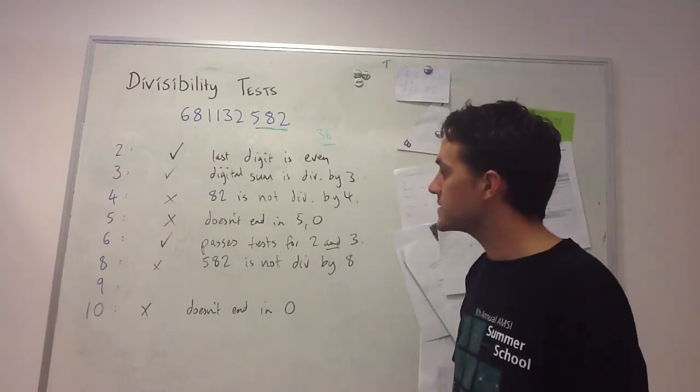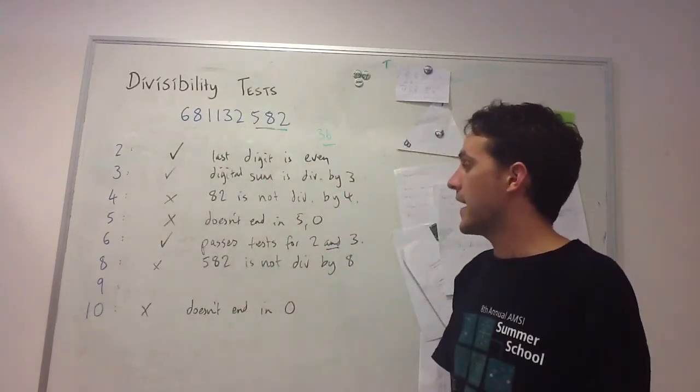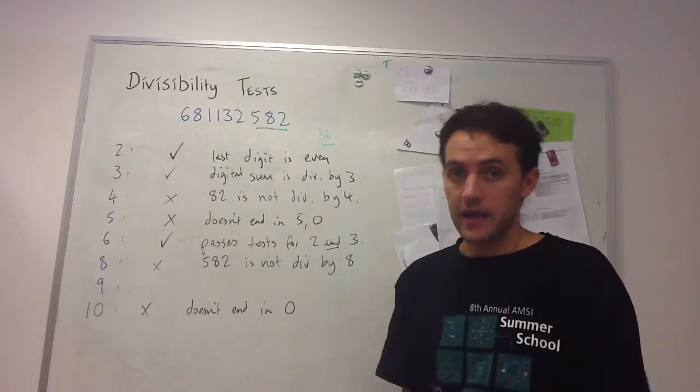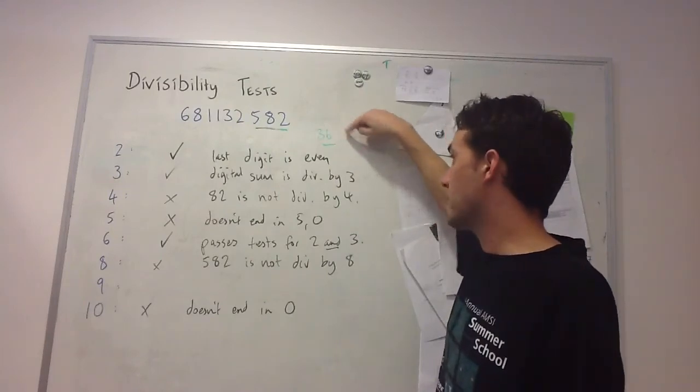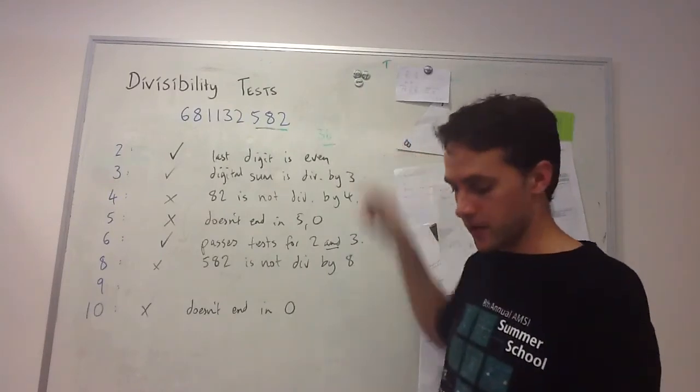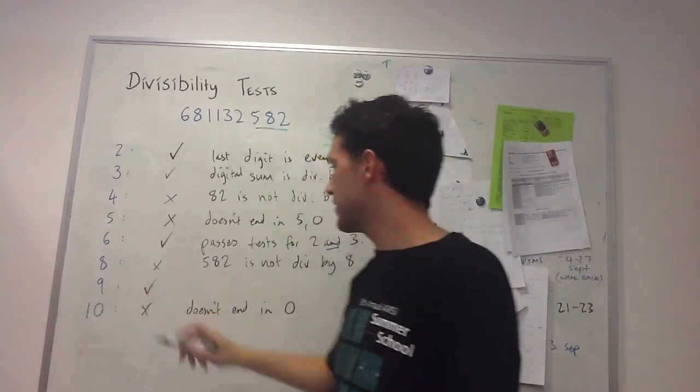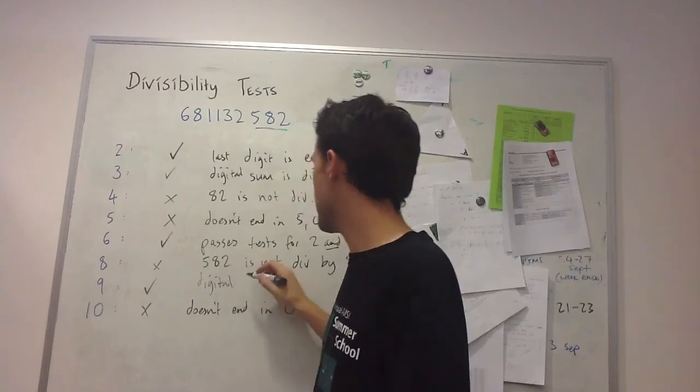For the last test, I'm checking if this is a multiple of 9. For multiples of 9, the digital sum is divisible by 9. It's similar to the test for 3, and we can reuse the digital sum we already worked out. 36 is divisible by 9, so this number is divisible by 9.